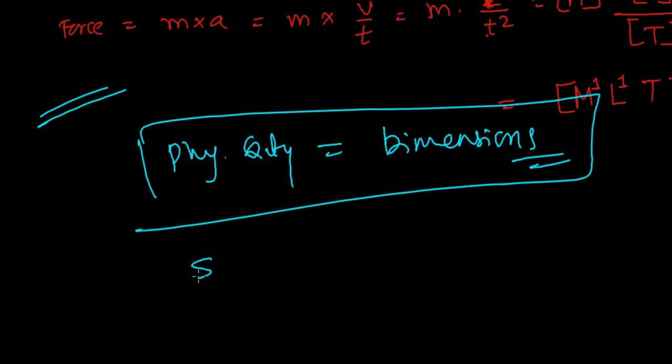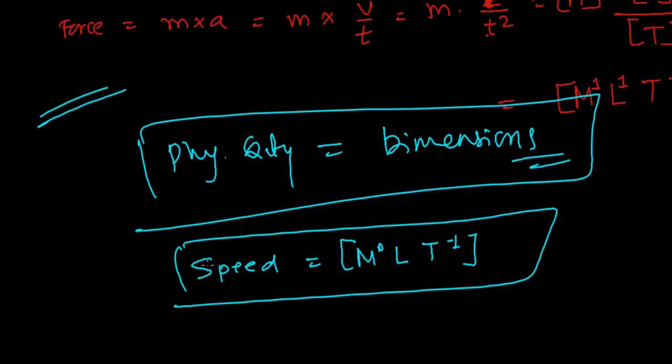So let's say here you have a speed and you're writing the dimensional formula of that, that's M^0 L T^-1. So this is an equation and this equation is called dimensional equation of speed.